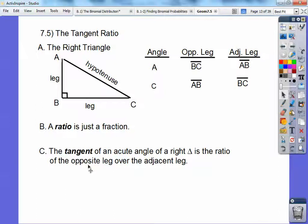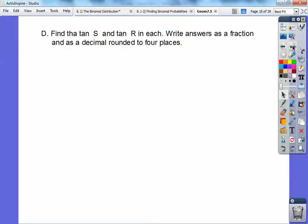So let's try some of this. The tangent of angle A right here would be the opposite leg, BC, over the adjacent leg, AB. So BC over AB. If I said angle C, the tangent of angle C is opposite leg, AB, over adjacent leg, BC. So AB over BC. So let's try some of that.